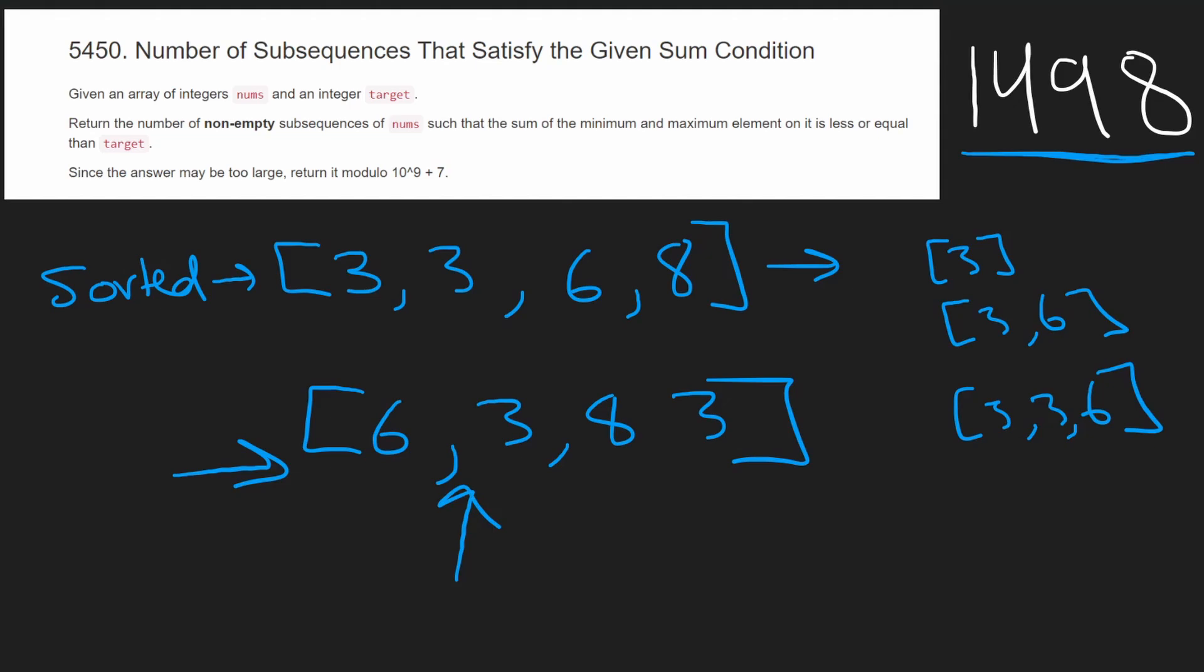And that means in the unsorted array, it'll be the exact same subsequences except they might be in a different order. For in this case, the subsequence might be 6, 3, 3 instead of 3, 3, 6 over here. They're the same subsequence, but the order of them has been changed. So that means even if you sorted the input array and then you tried to compute the number of subsequences that satisfy this condition, it would still be the same number.